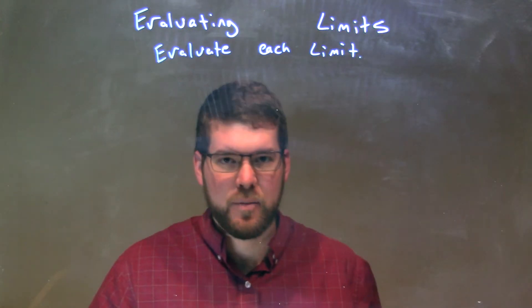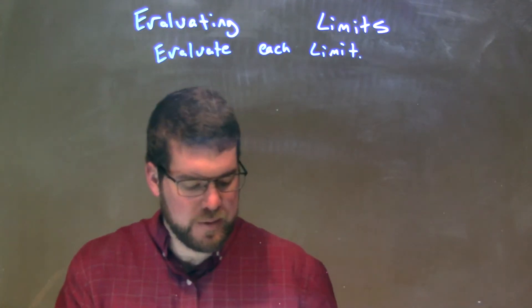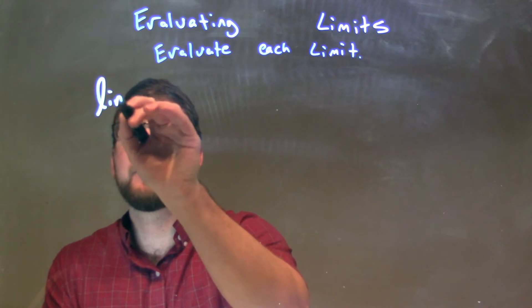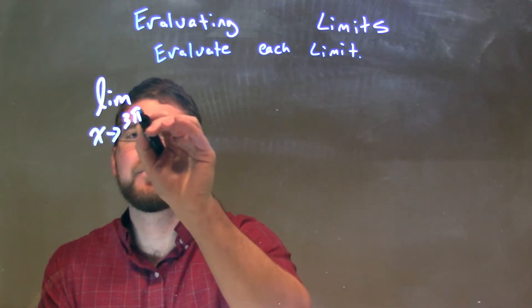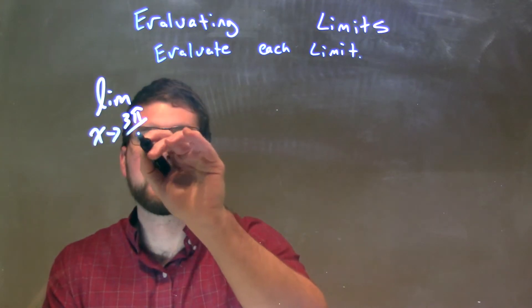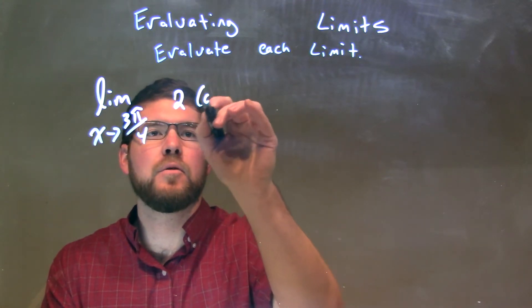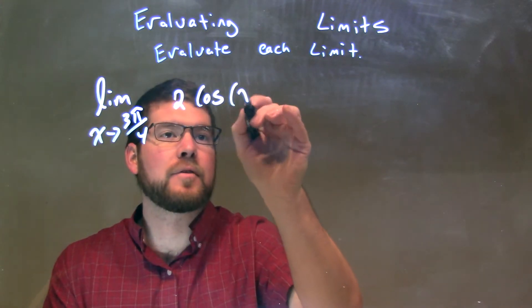We're going to evaluate each limit here. If I was given this limit, the limit as x approaches 3π/4 of 2 cosine of x.